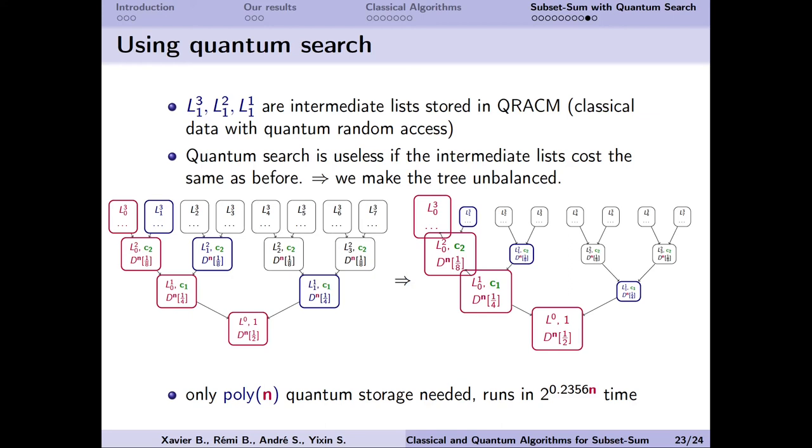In particular, if they are as big as the lists in the classical HGJ algorithm, then we will get no speedup. The solution is to make the tree unbalanced, so that the classical lists are much smaller than the quantum ones. By optimizing the sizes of the lists, we obtain the exponent 0.2356. An important feature of our algorithm is that it only uses polynomial number of qubits.